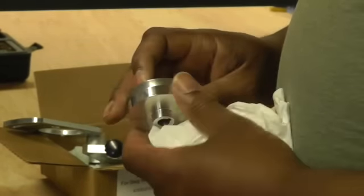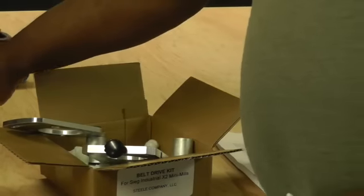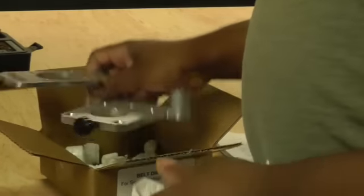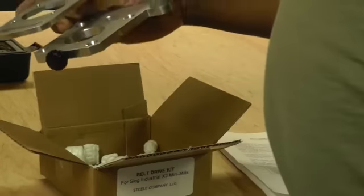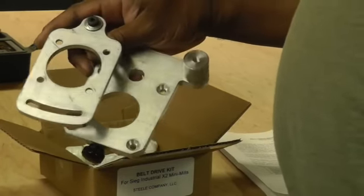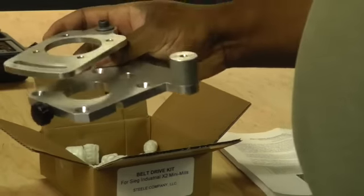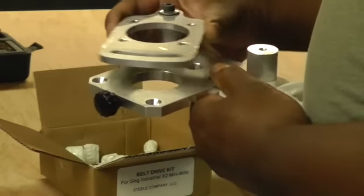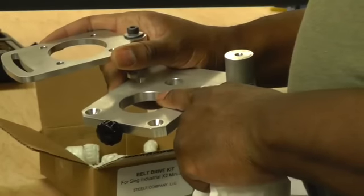This mount replaces the parts that are currently on top of the head of the mill. There's an adjustable plate which sets the belt tension and the main gear mounts to here.